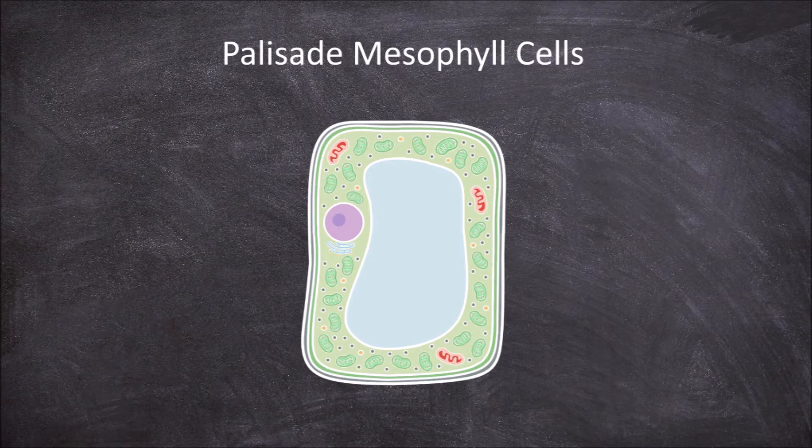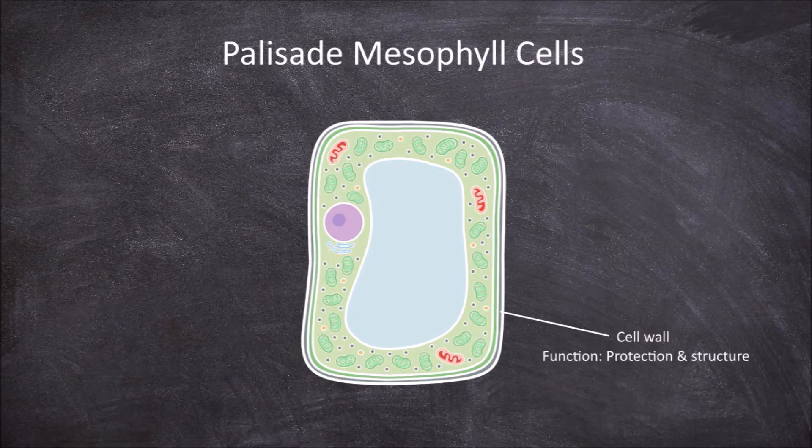They are made up of a cellulose cell wall. The cell wall is a rigid layer lining the outside of the cell that is composed of cellulose. The function of the cell wall is to provide protection to the cell and to maintain the structure and shape of the cell.